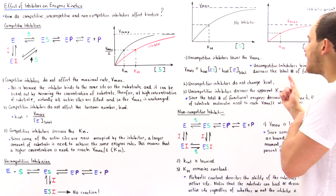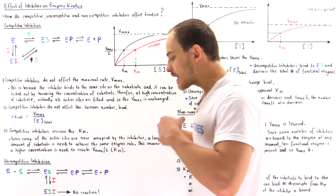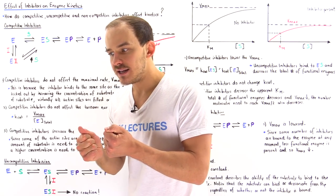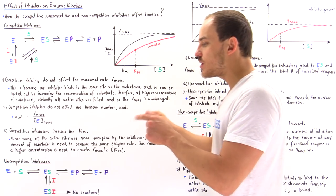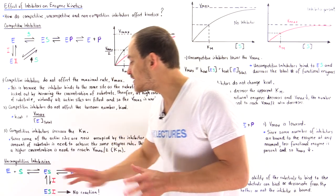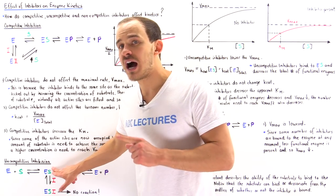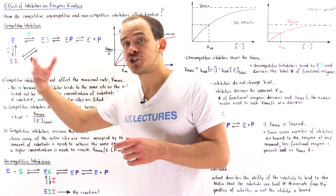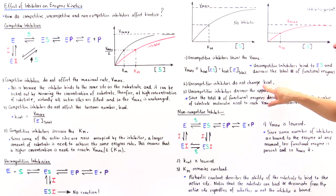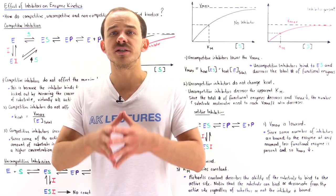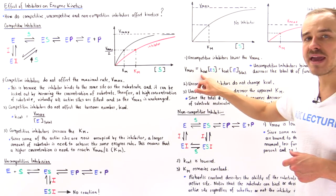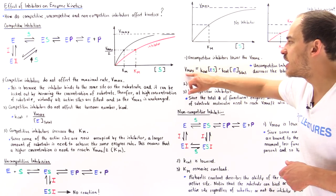What about Kcat, the turnover number? The turnover number describes the ability of the active site to transform substrate molecules into product per unit time. Because when the inhibitor is not bound to a particular enzyme-substrate complex, that active site's efficiency to change substrate to product doesn't actually change — the Kcat value in uncompetitive inhibition also doesn't change; it remains the same. So Kcat remains unchanged, but because the number of functional enzymes decreases, Vmax also decreases.